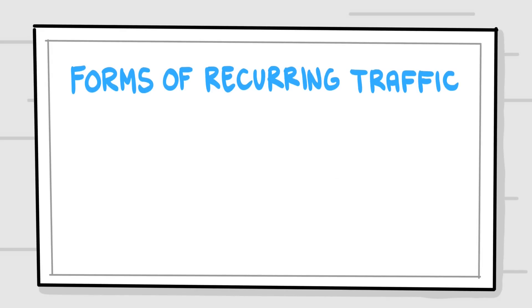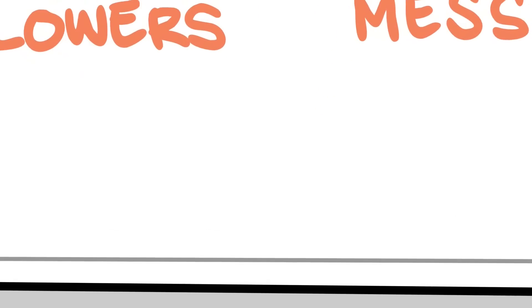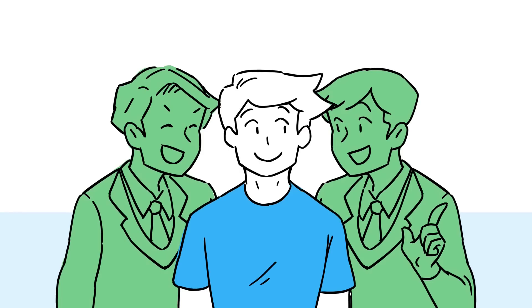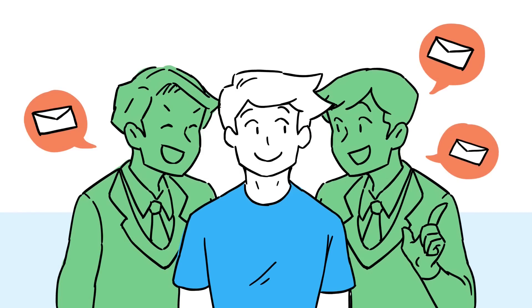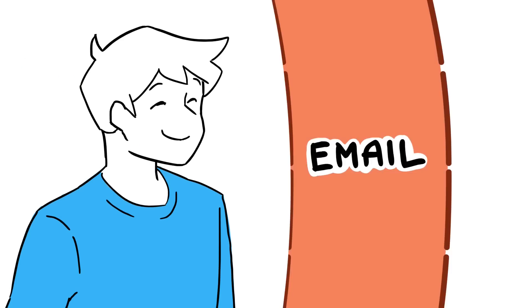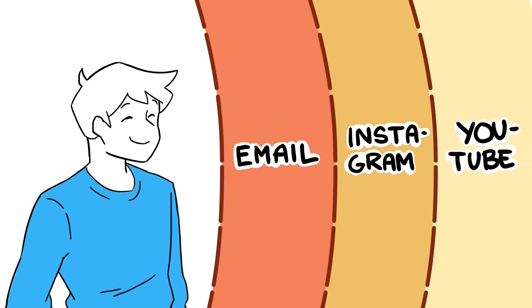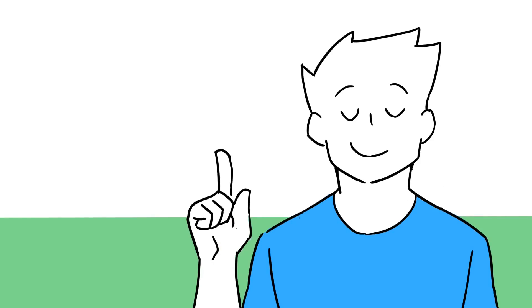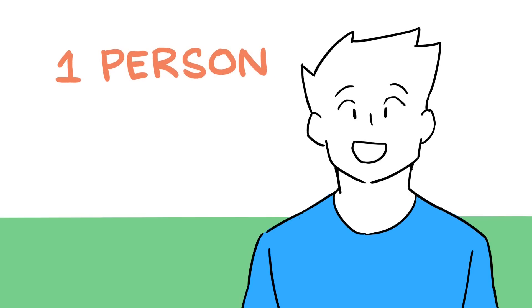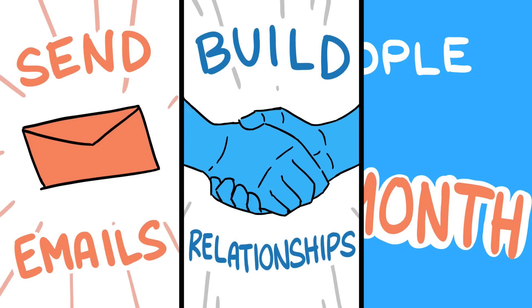There are numerous forms of recurring traffic: subscribers, followers, connections, and even automated Facebook Messenger. But the hands-down most powerful form of recurring traffic right now is an email list. Most online entrepreneurs will eventually ask you to join their newsletter or mailing list, and the reason is that people hold their email inboxes closer to their hearts — it's more personal than a simple follow on Instagram or a subscribe on YouTube. When you receive an email from someone, it feels like they're talking directly to you, which makes it easier to build a relationship. On average, for every person on your email list, you should be able to generate $1 per month, meaning an email list of 10,000 people will make you around $10,000 a month if you continue to send good emails, build relationships, and tell people about your offers.